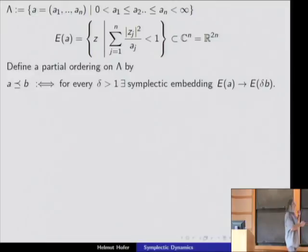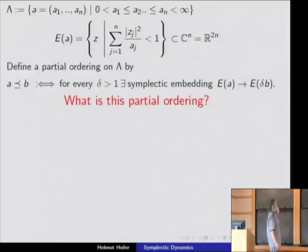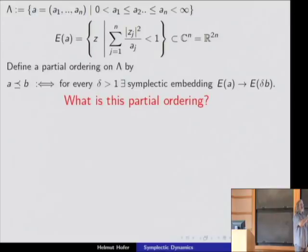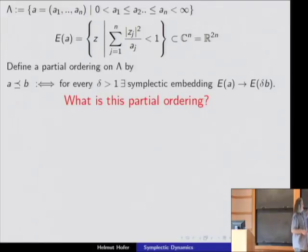So in higher dimensions, we don't even know what a good conjecture is. All the invariants I can come up with from symplectic field theory don't allow me to compute volume. So my feeling is there is some serious real estate missing in our picture.